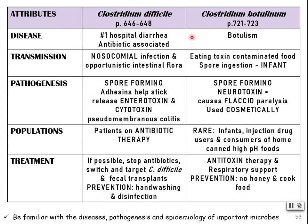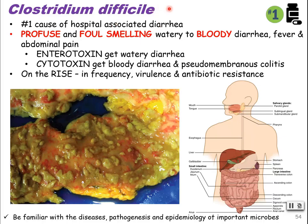Clostridium difficile — we've talked about this before. Usually when someone's on broad-spectrum antibiotics, that allows this bacterium to overgrow. They are naturally occurring in the body, but normally kept in check by the other microflora. It is the number one cause of hospital-associated diarrhea.